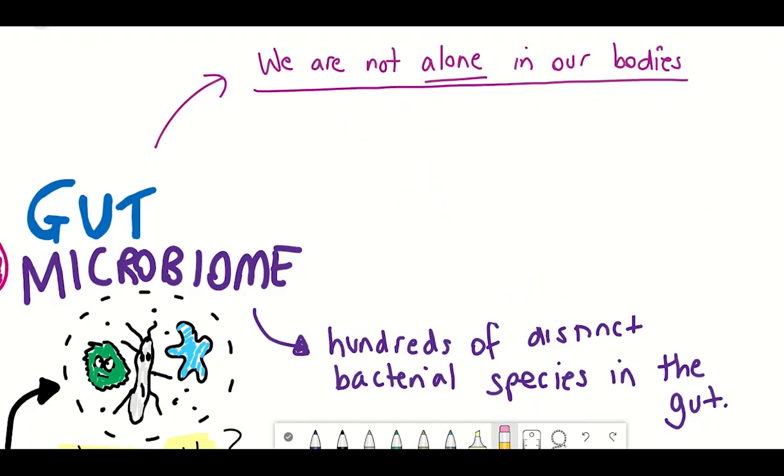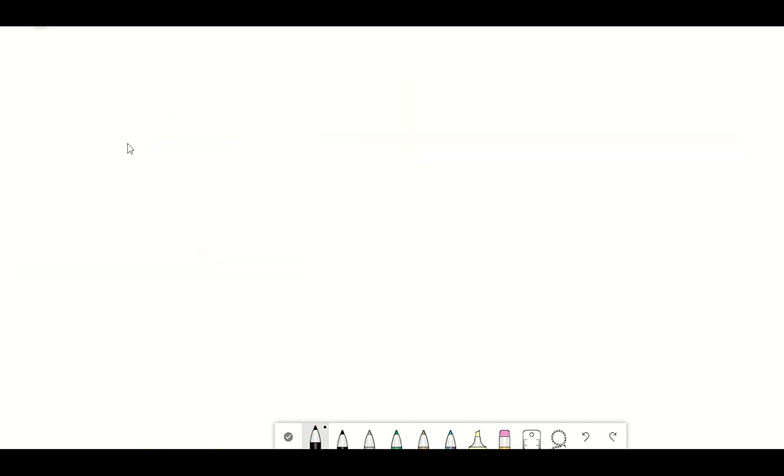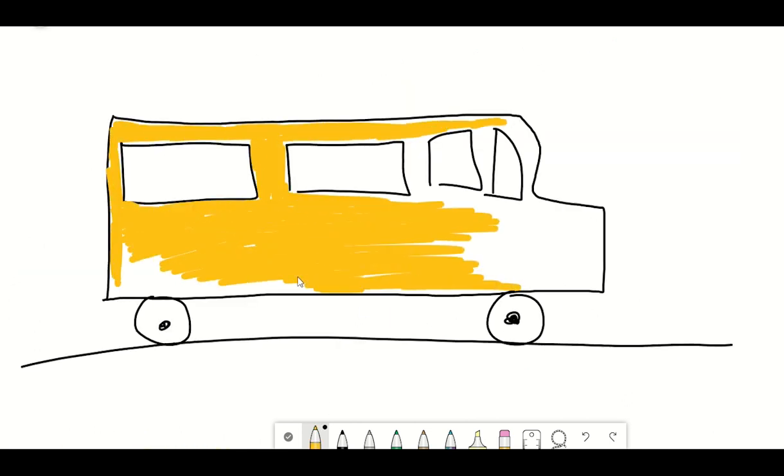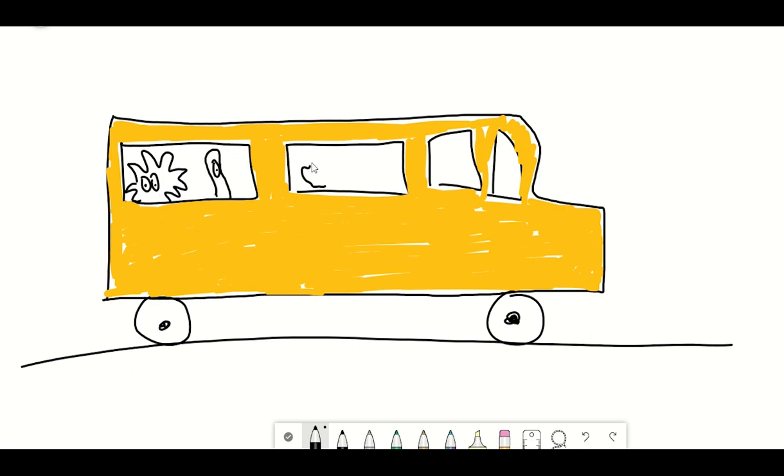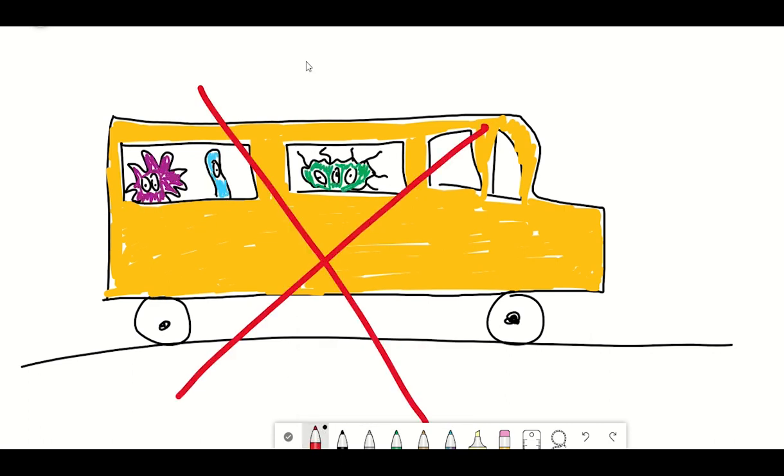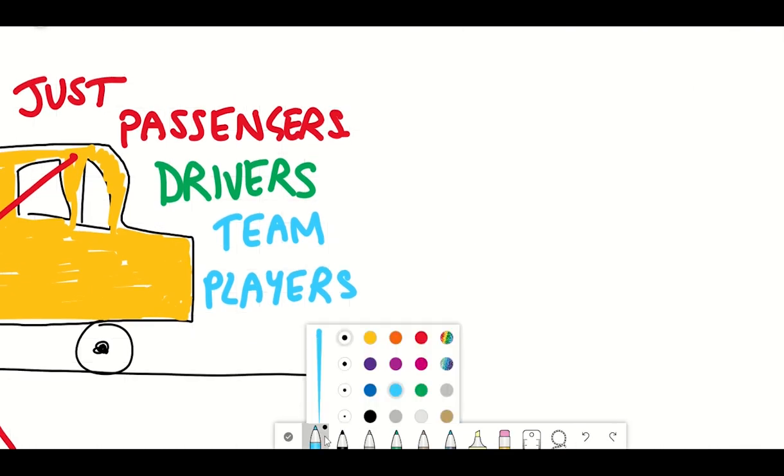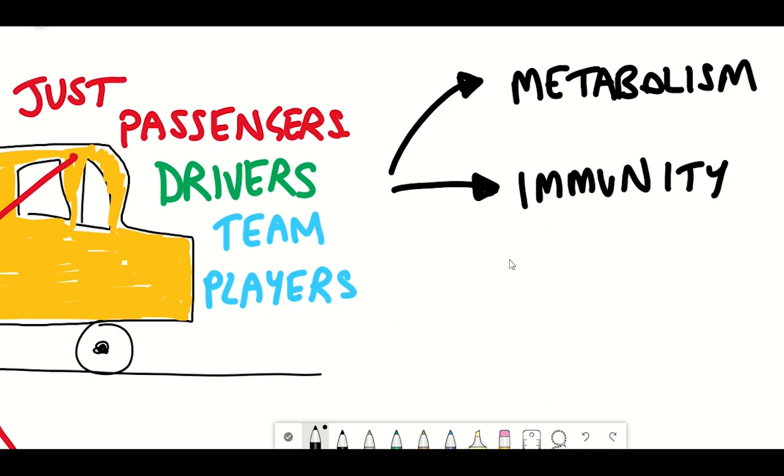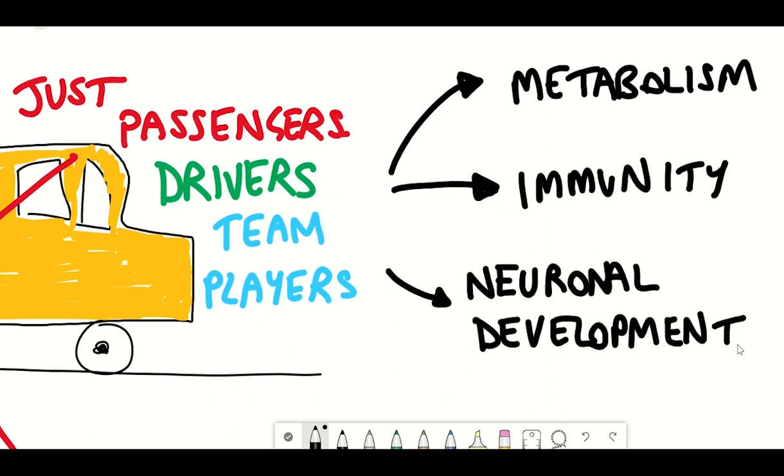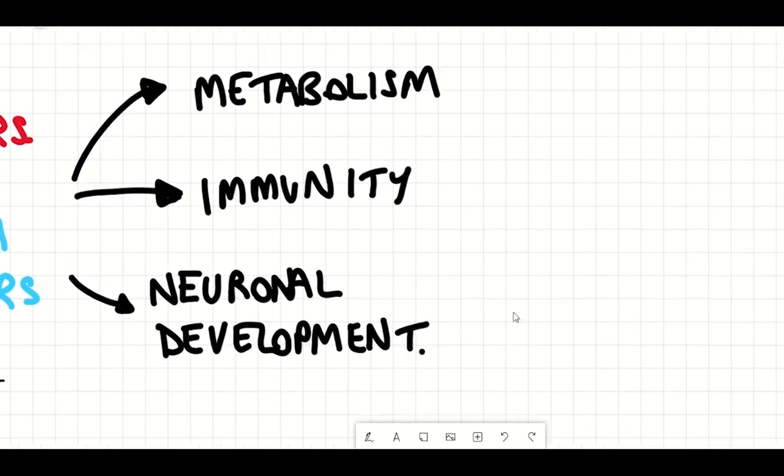While some of these microorganisms are beneficial, others are pathogenic. The important thing to take from this is that these microbes are not just passengers within our bodies, but they actually play an active role. For example, studies have shown that these microorganisms have a key role in metabolism, immunity, and neural development, just to name a few. And that's just from our understanding so far.